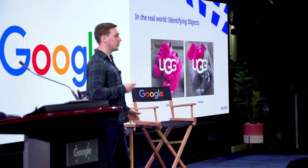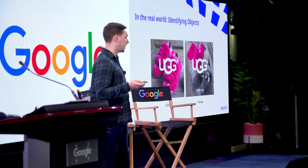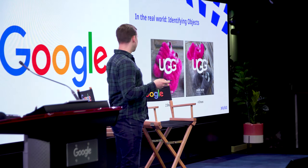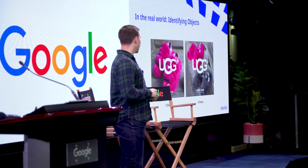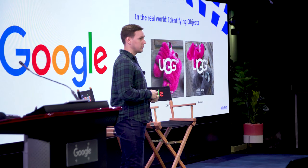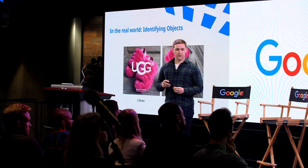A real-world example of how you might use this in ad creative is identifying objects. We can see we have two shoes and four shoes in each ad. Being able to identify the number of objects of a specific product that you're offering, and maybe there's a performance lift with running different quantities of the product in the ad.